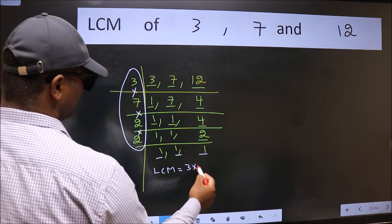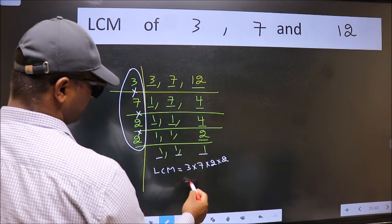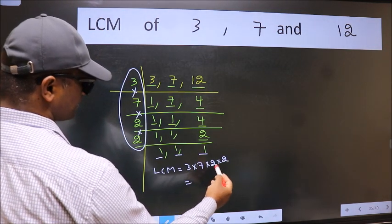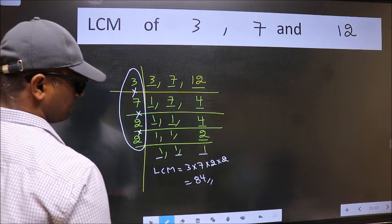That is 3 into 7 into 2 into 2. When we multiply these numbers, we get 84 as our LCM.